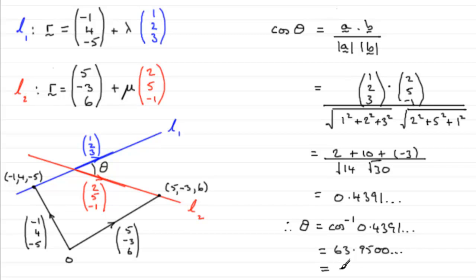Which, when rounded to one decimal place, that would be 64.0 degrees to 1dp.